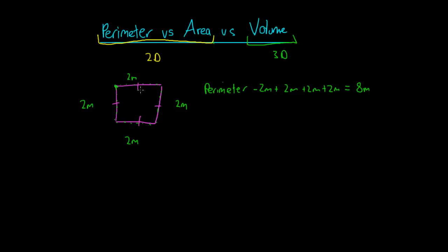Area looks at the space that the shape covers. For this square, if we divide it into four equal parts — the space inside the square — we want to work out exactly how much space it covers. If this length is two metres and we divide it in half, this length here will be one metre. We divide this side in half, that length will be one metre. So we have a small one-by-one metre square, and there'll be four of these — one here, one here, one here, and one here.